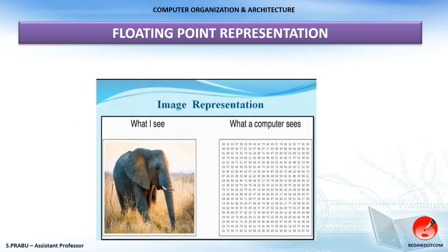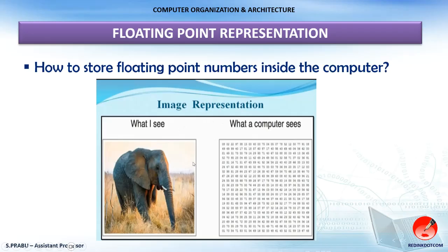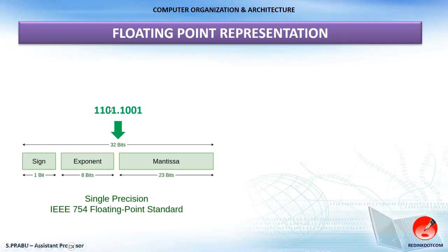Let's see the meaning of representation. In this diagram, I explain what image representation is. This is an image as we see it, but inside the computer this image can be stored by means of numbers only. Each and every pixel has some color value; that color value contains equivalent binary numbers, and those numbers are stored inside the computer. When we open this file, the numbers are regenerated into a color value and shown as the original image. So representation means how particular data is stored inside the computer.